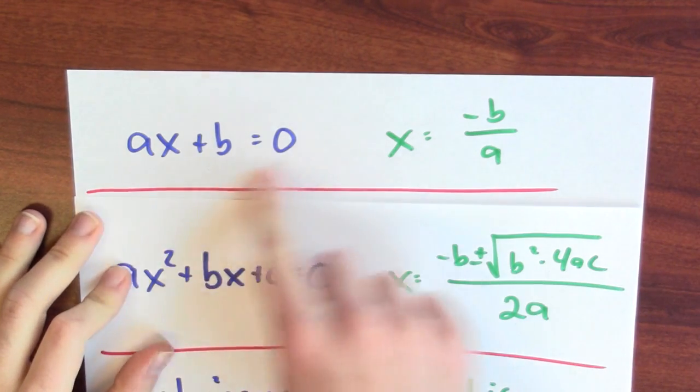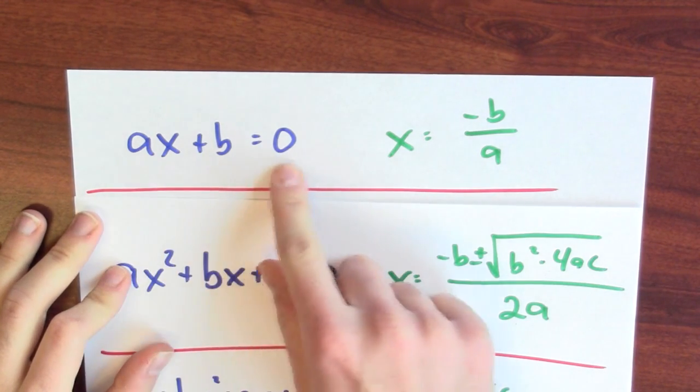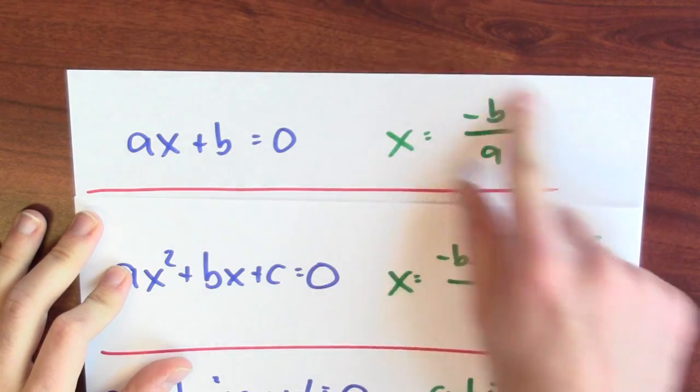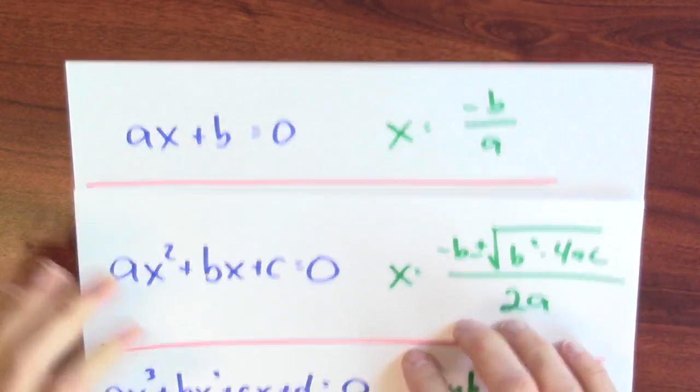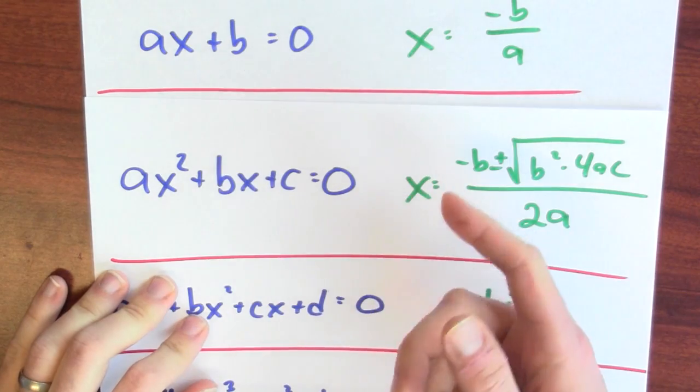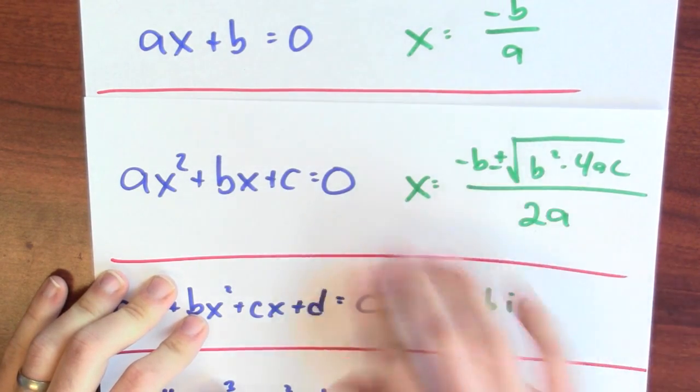Now, if we were just trying to find where some linear term was equal to 0, you can just solve for x in that case. If I were just trying to figure out where some quadratic was equal to 0, there's the quadratic formula.